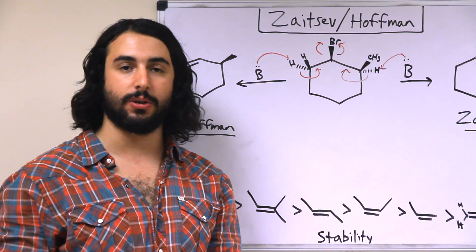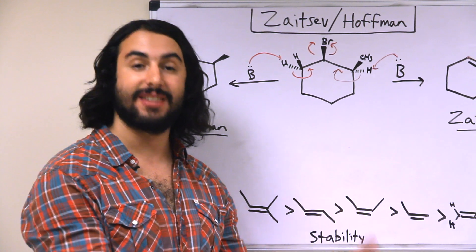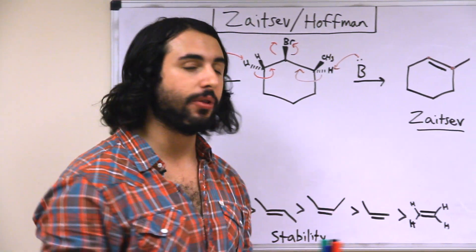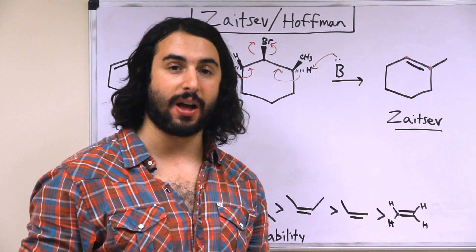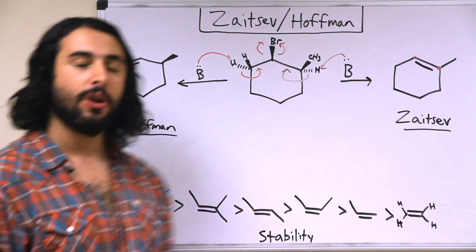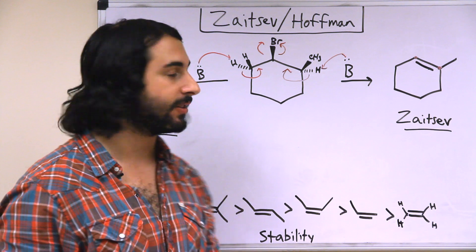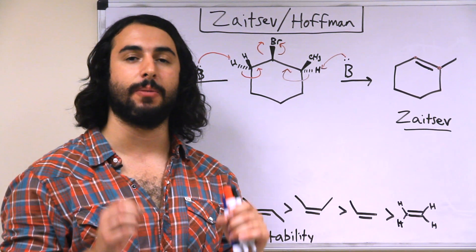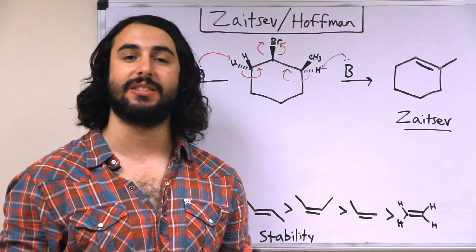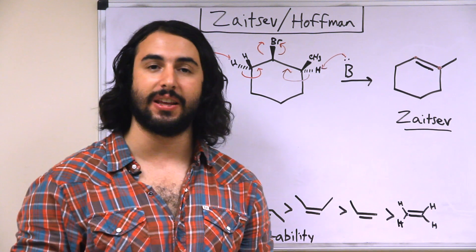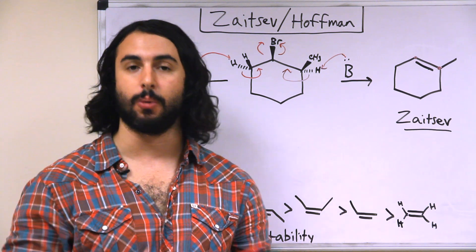You can have an unsubstituted, mono-substituted, di-substituted, tri-substituted, or at maximum tetra-substituted alkene. We label the more highly substituted alkene as the Zaitsev product, and the less substituted as the Hoffmann product. It is not the case that any tri-substituted alkene would be labeled Zaitsev — it is simply the more substituted of the two. It is a relative term, because a tri-substituted alkene could be the Hoffmann product if the Zaitsev product were tetra-substituted.